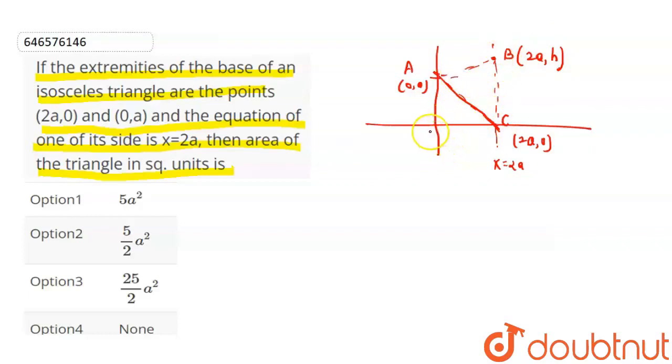So first of all, I can write here AB equal to BC. If I do this square, then AB square equal to BC square because AC is the base. Now I apply the distance formula between two points. Distance formula is x1 minus x2 whole square plus y1 minus y2 whole square, under root.